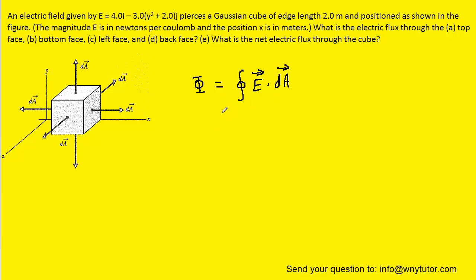In part A, we're asked to calculate the electric flux through the top face. If we outline the top face, we'll notice that the y-coordinate of that top face is actually 2 meters, because the cube has edge lengths of 2 meters. We'll go ahead and plug into the electric field equation to determine what the electric field is through the top face of the cube.